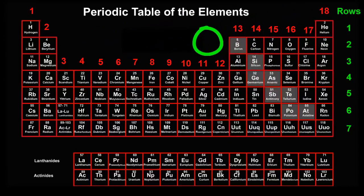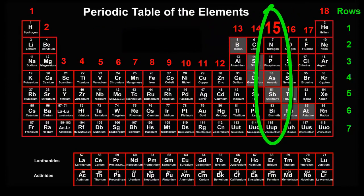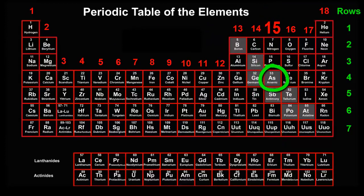Choose an element in group 15. Could be nitrogen, or arsenic, or any of the others. Your choice.